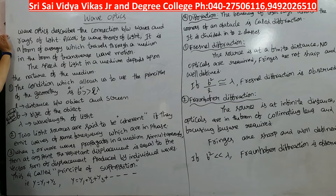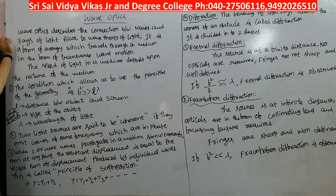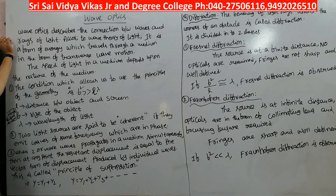Wave Optics describes the connection between waves and the rays of light. It deals with the connection between light waves and light rays. Optics means light, waves means waves. So Wave Optics describes the connection between light waves and light rays.